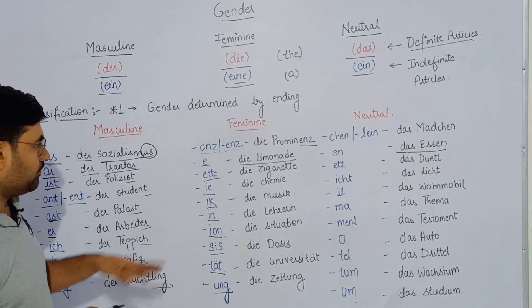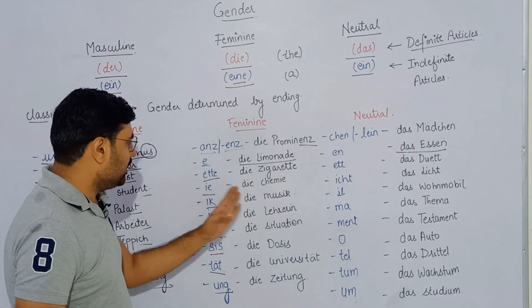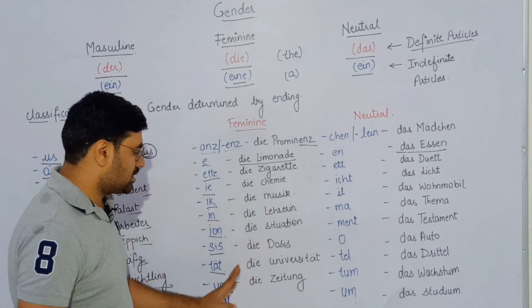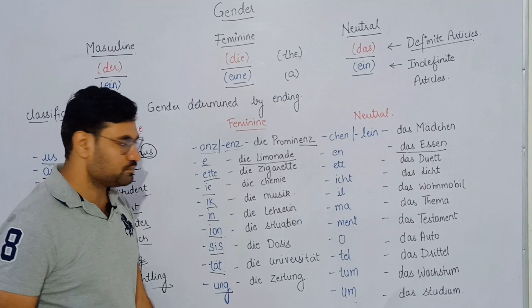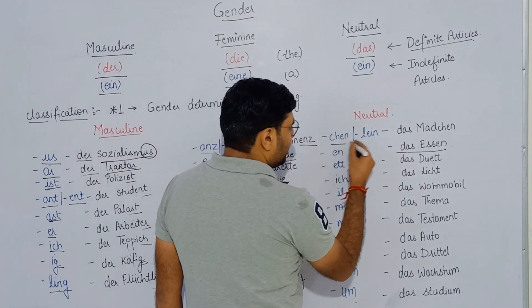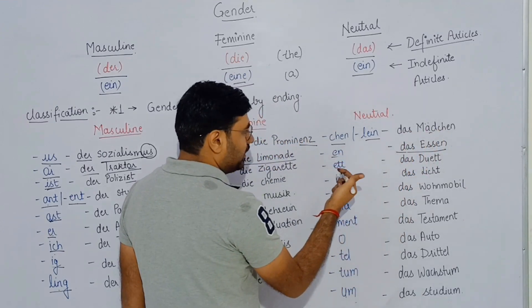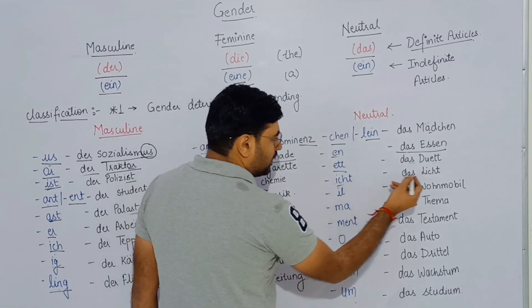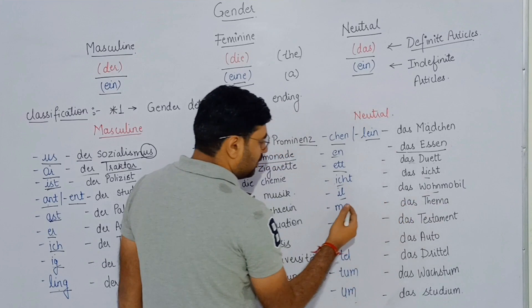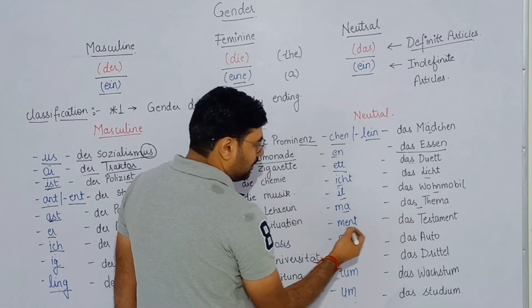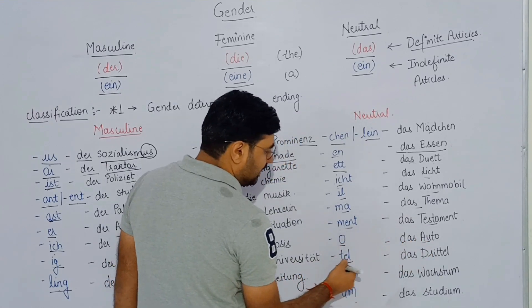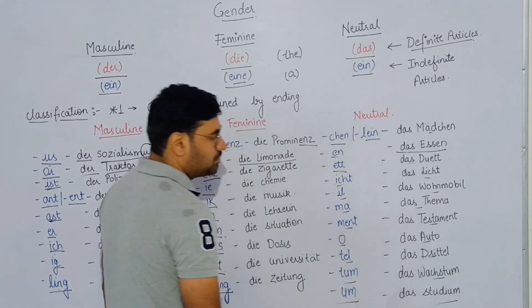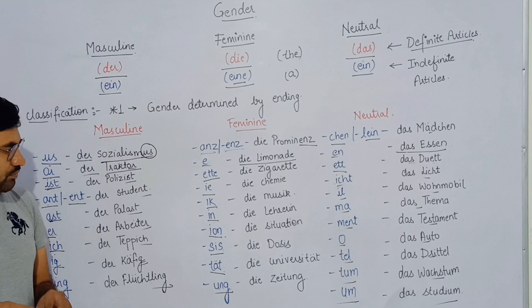For feminine words, endings include: -a, -nz, -e, -enz, -ee, -t, -tte, -ie, -ik, -in, -ion, -sis, -tät, -ung. Examples: die Limonade, die Zigarette, die Chemie, die Musik, die Lehrerin, die Situation, die Dosis, die Universität, die Zeitung. For neutral words, endings include: -chen, -lein, -eil, -ett, -icht, -il, -mobil, -ma, -ment, -o, -tel, -tum, -um. Examples: das Mädchen, das Essen, das Duett, das Automobil, das Thema, das Testament, das Auto, das Drittel, das Wachstum, das Studium.